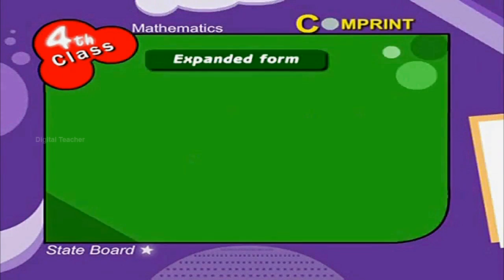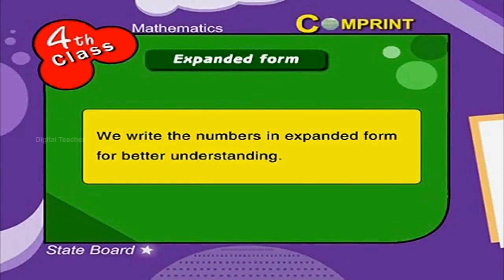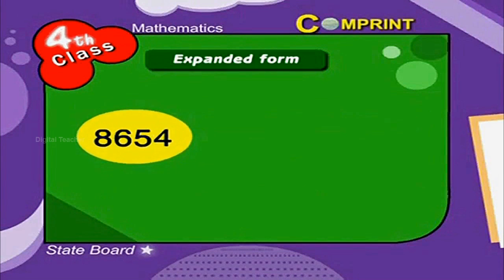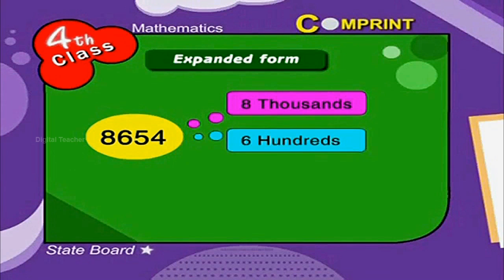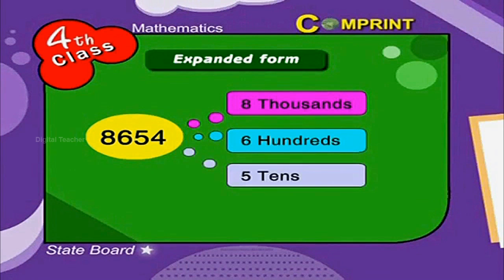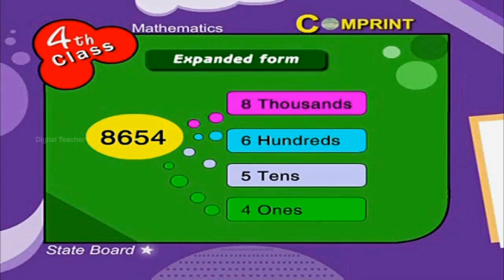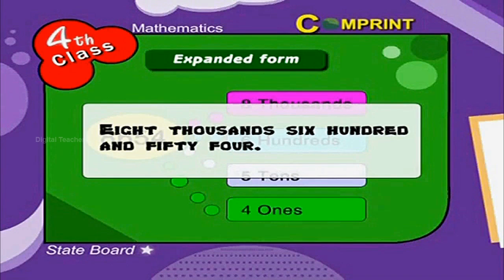Expanded Form. We write the numbers in expanded form for better understanding. For example, 8654 can be written as 8000 plus 600 plus 50 plus 4 ones. It can be expressed as 8654.